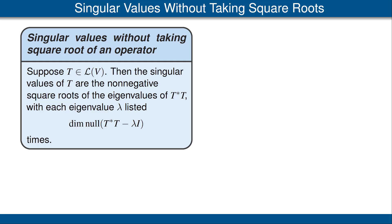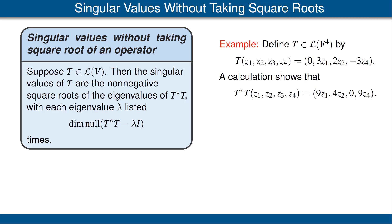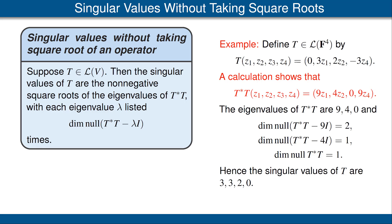Please read the proof of this result in the book. Let's look at an example. Define T to be the operator on F4 shown here, where F4 has the standard inner product — the same example we computed earlier. We get the same formula for T*T, a diagonal matrix with entries 9, 4, 0, and 9 along the diagonal. Thus, the eigenvalues of T*T are 9, 4, and 0, with the dimensions of the corresponding null spaces shown. Taking the non-negative square roots, the singular values of T are 3, 3, 2, and 0 — the same result as before, but without computing the square root of T*T.